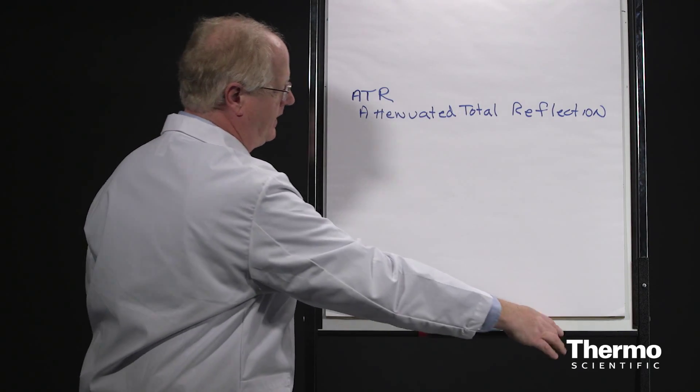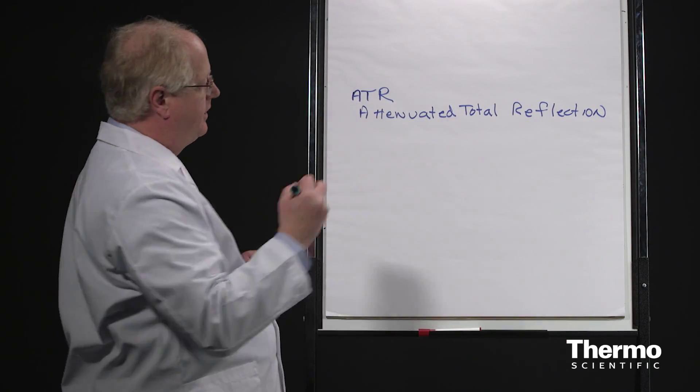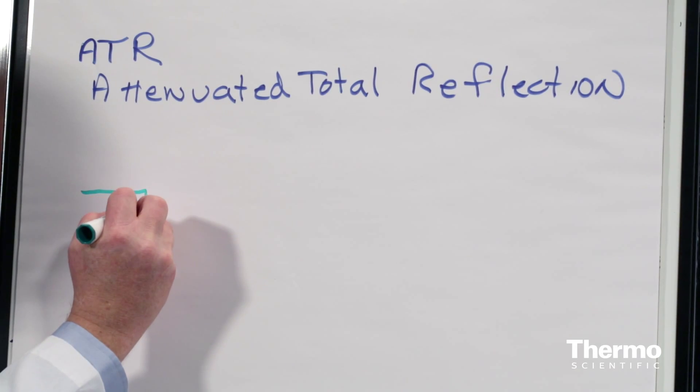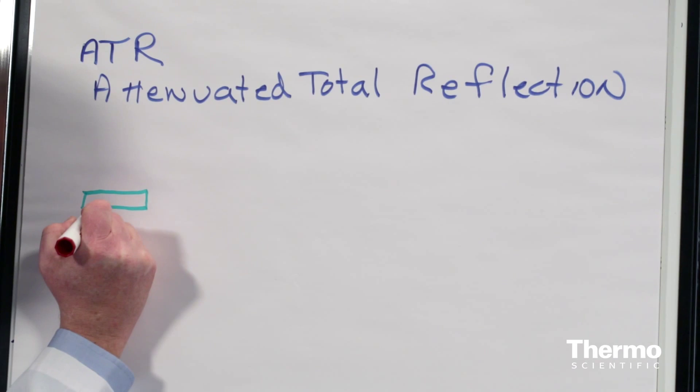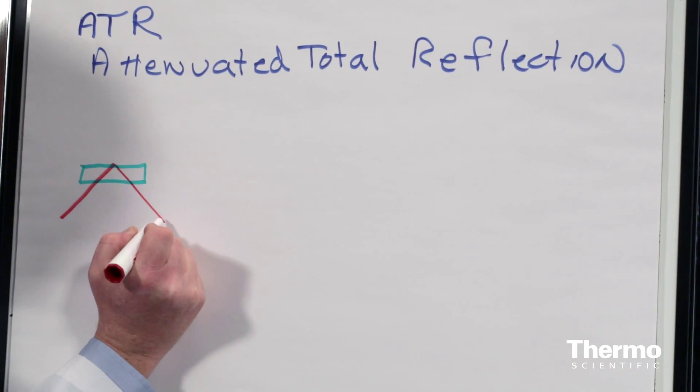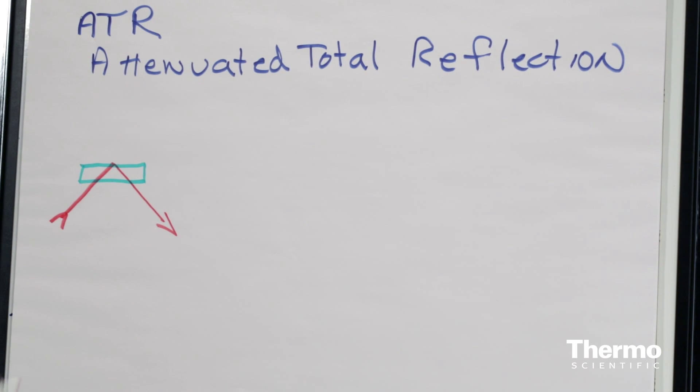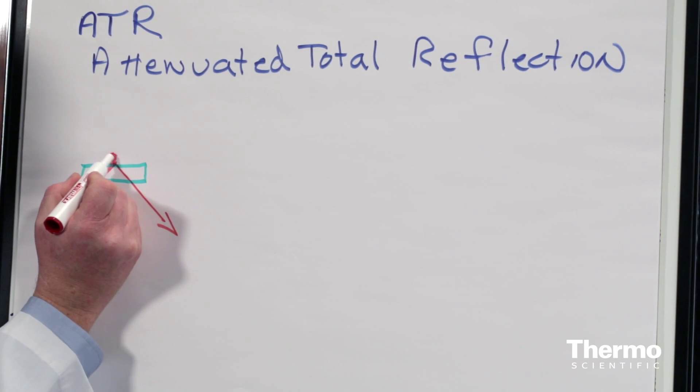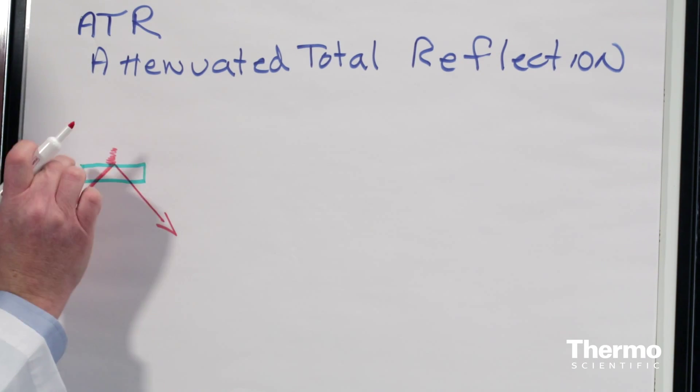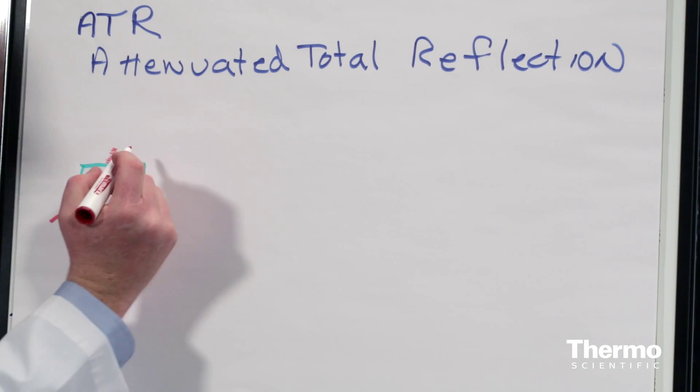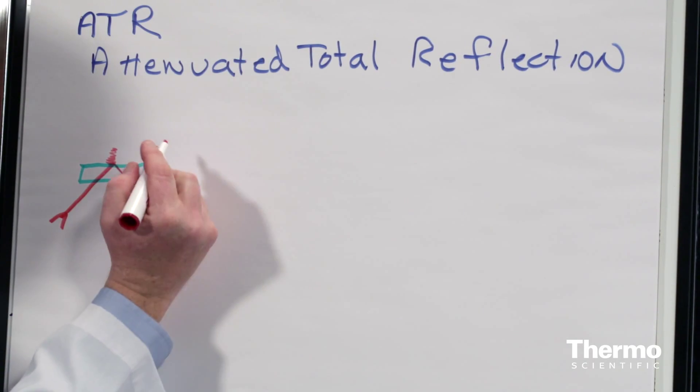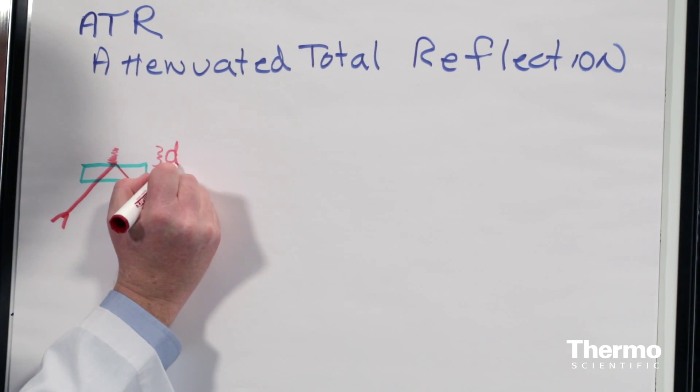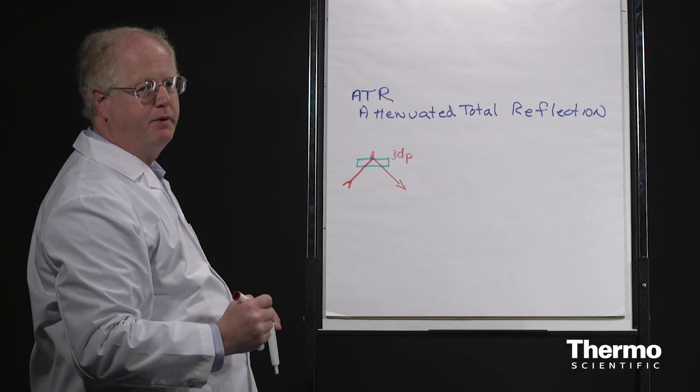First of all, how? In ATR you have a crystal of some material through which the infrared light passes. The infrared light comes up, passes through the crystal, and then goes back down. Where it strikes the surface of this crystal, it sets up something called an evanescent wave. That evanescent wave leaves the crystal or scans the material outside the crystal to a distance which we call DP, the depth of penetration.